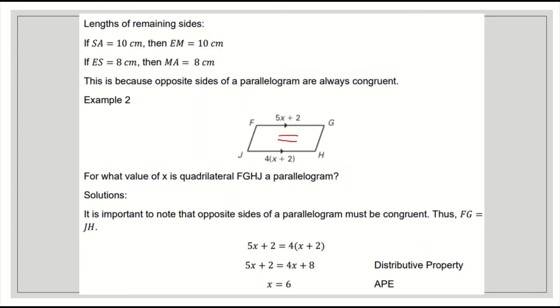5x plus 2 is equal to 4 times x plus 2, since we're going to make an equation. So 5x, that's FG. Then JH is 4 times x plus 2. Distribute the 4. It will become 4x plus 8. So 5x plus 2 is equal to 4x plus 8. Then transpose. This will become 5x minus 4x is equal to x, and 8 minus 2 is 6. Therefore, the value of x is 6.